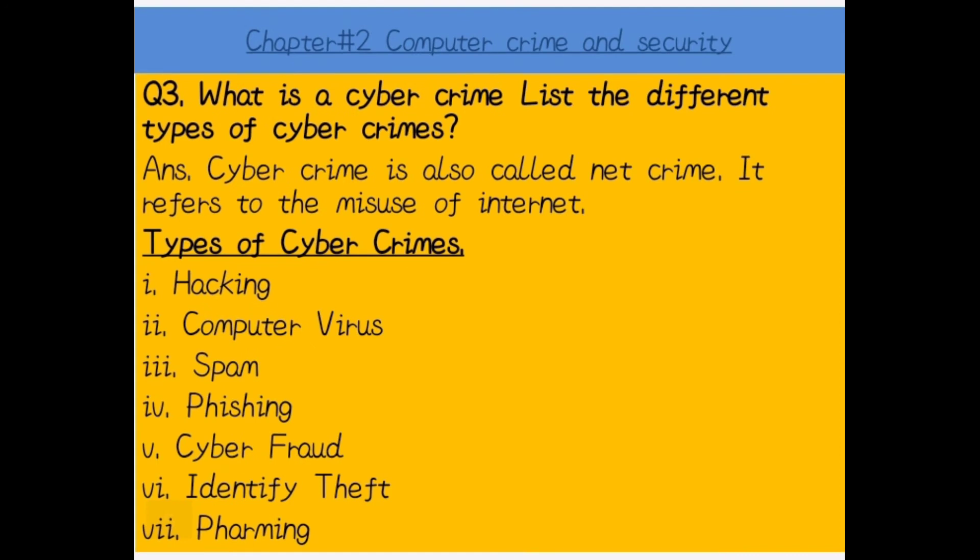Question number three: What is cyber crime? First, we need to know the difference between cyber crime and computer crime. Computer crime میں صرف وہ illegal activities ہوتی ہیں جو آپ کے computer سے relate کرتی ہیں۔ لیکن cyber crime میں internet اور computer دونوں آجاتے ہیں — آپ illegal activities net پہ، mobile پر، مختلف طریقوں سے بھی کر سکتے ہیں۔